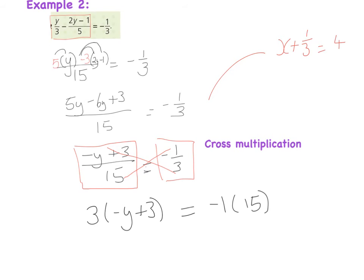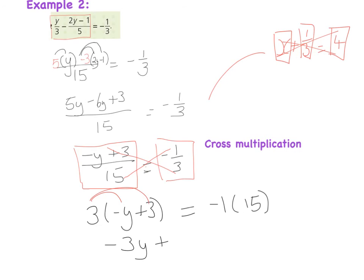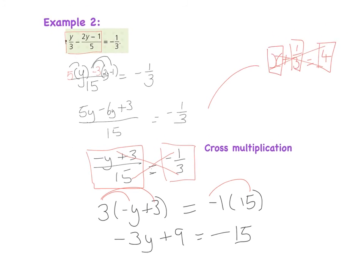You can only cross multiply if you have one thing on each side — in this case a fraction on each side. Now expand the brackets: 3 times minus y gives minus 3y, and 3 times 3 gives plus 9. That equals minus 1 times 15, which is minus 15.